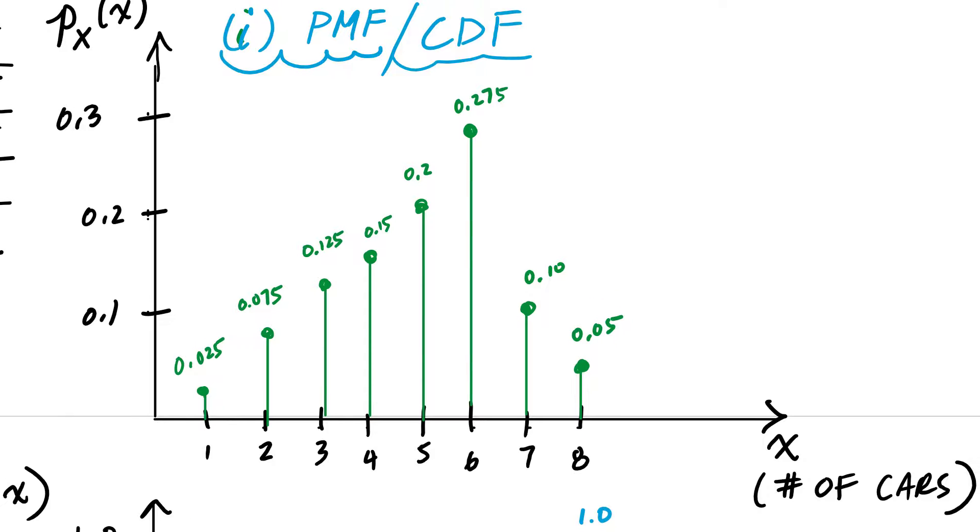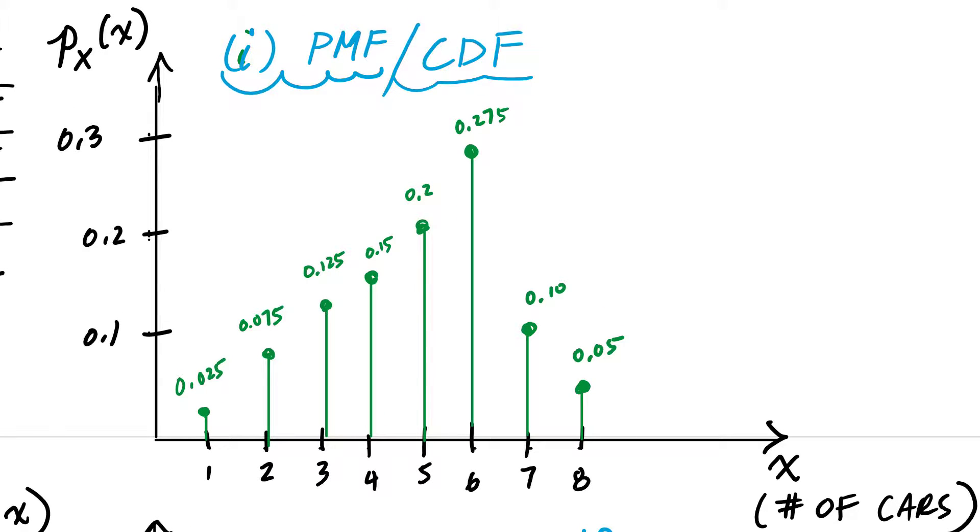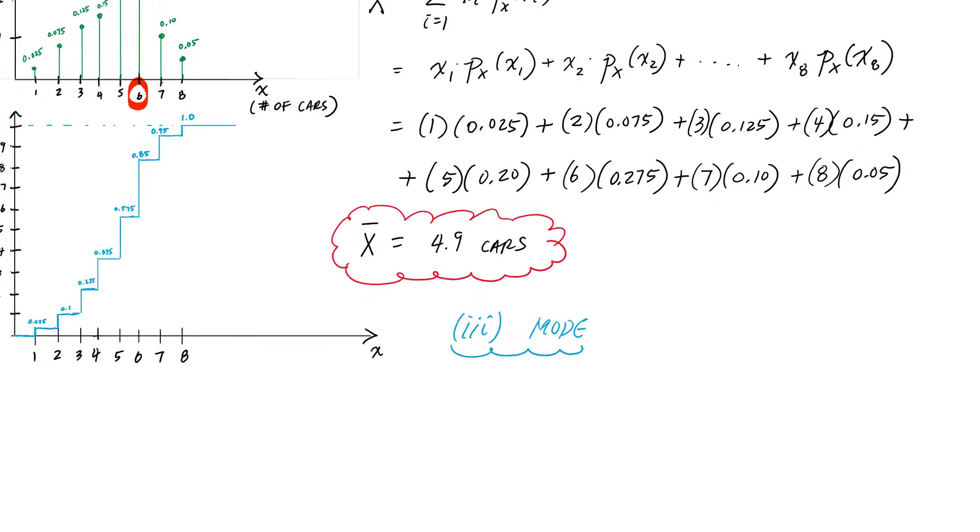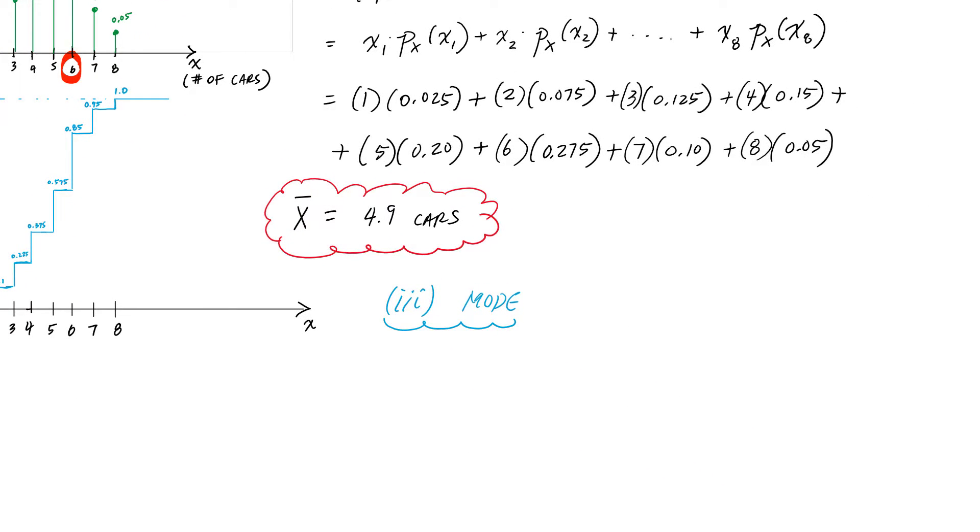That's associated with 6. So this number right there, the mode equals 6, and that's because the probability of the random variable X equal to 6 is 0.275 and has the highest probability associated with it.